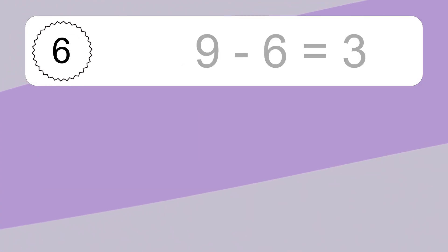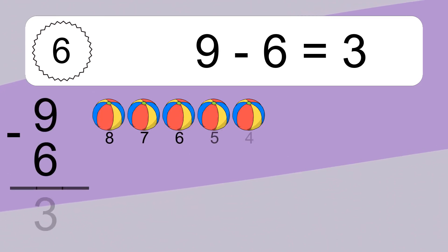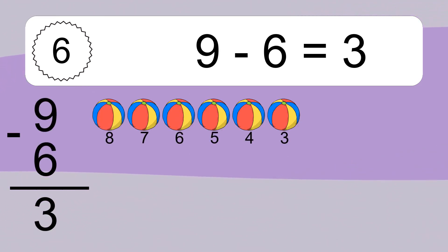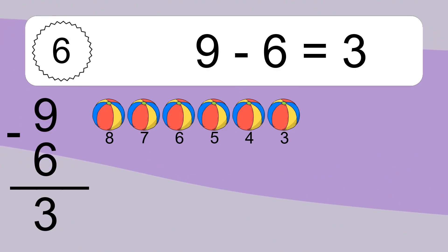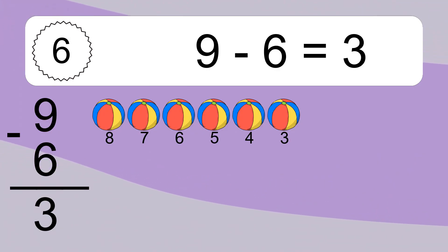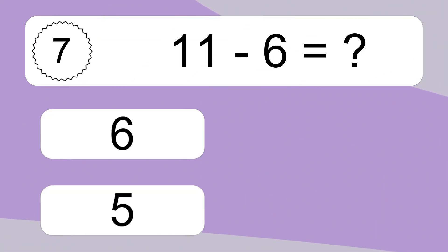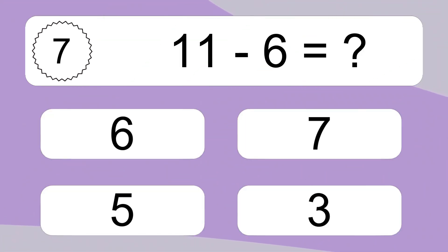9 minus 6 equals what? 9 minus 6 equals 3. Let's count it: 8, 7, 6, 5, 4, 3.